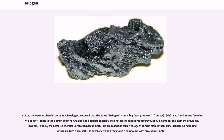In 1811, the German chemist Johann Schweigger proposed that the name halogen, meaning salt producer, from the Greek roots hals (salt) and genein (to beget), replace the name chlorine, which had been proposed by the English chemist Humphrey Davy. Davy's name for the element prevailed. However, in 1826, the Swedish chemist Jöns Jacob Berzelius proposed the term halogen for the elements fluorine, chlorine, and iodine, which produce a sea-salt-like substance when they form a compound with an alkaline metal.